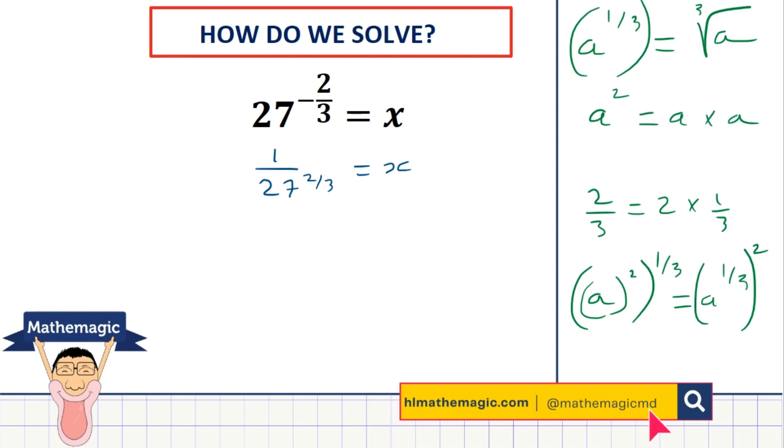So I have a choice here with my 27. Would I like to square it or would I like to take the cube root of it? Well, it seems that 27 times 27 is a pretty large operation. However, 27 is a perfect cube. It happens to be 3 times 3 times 3. So when you do the cube root of 27, you'll find that that's 3.